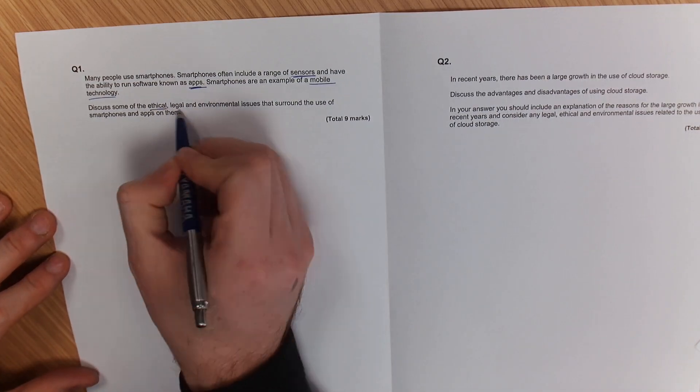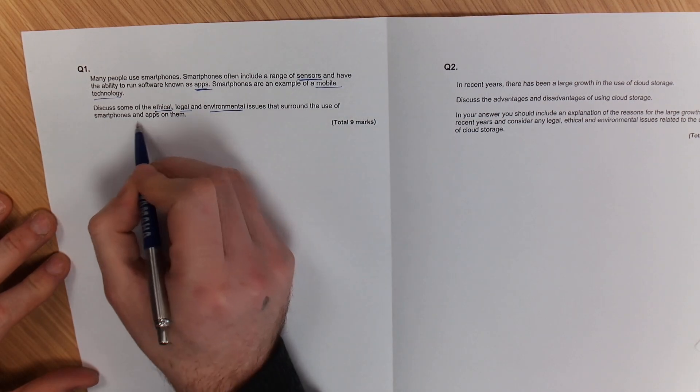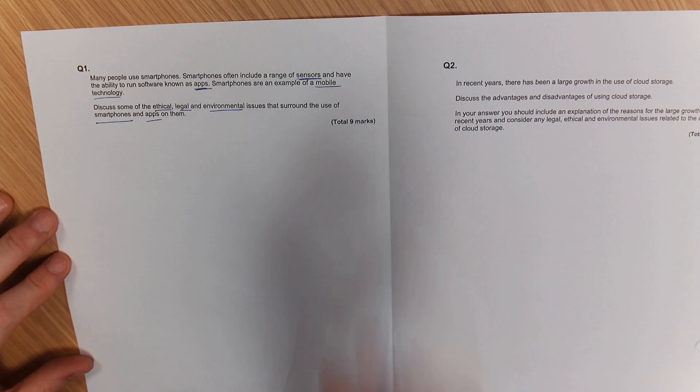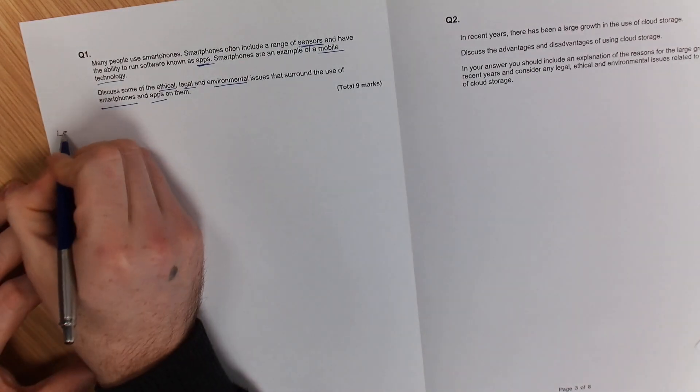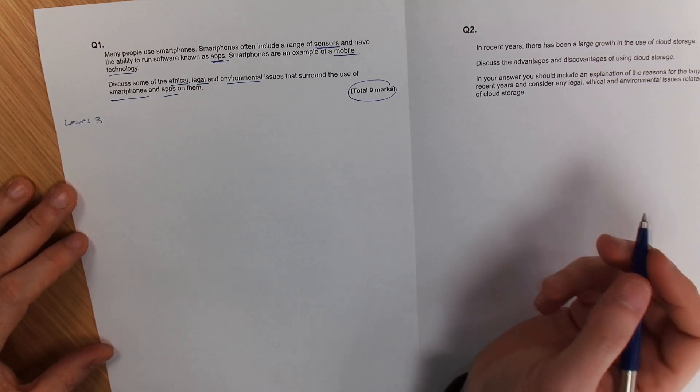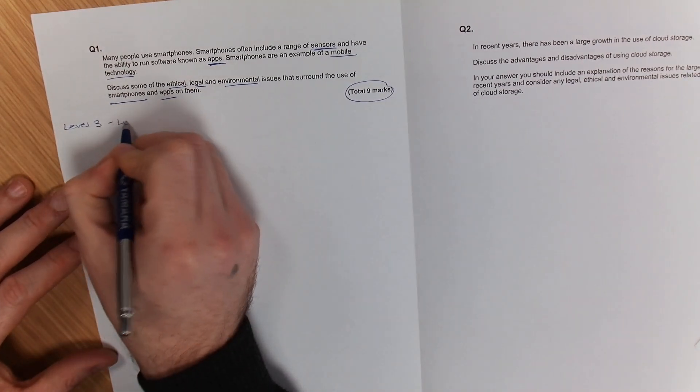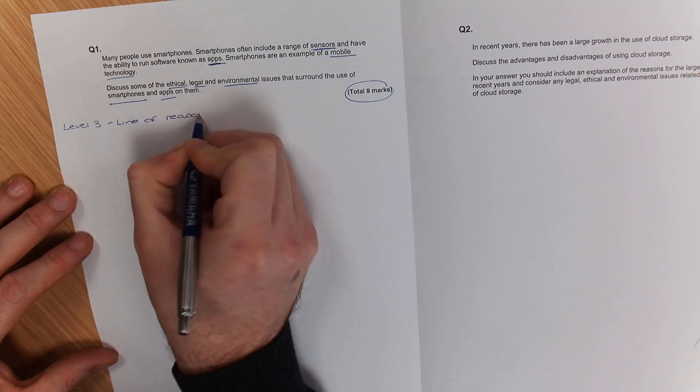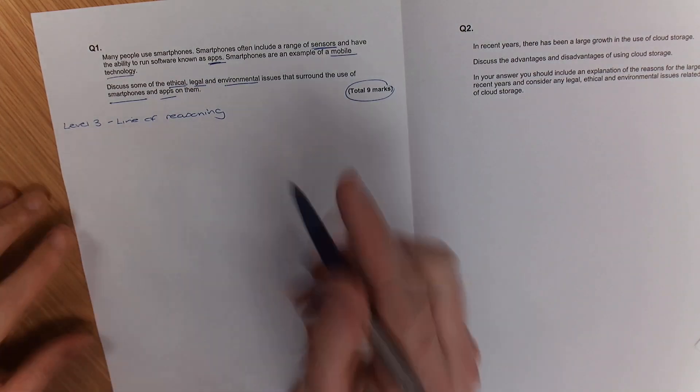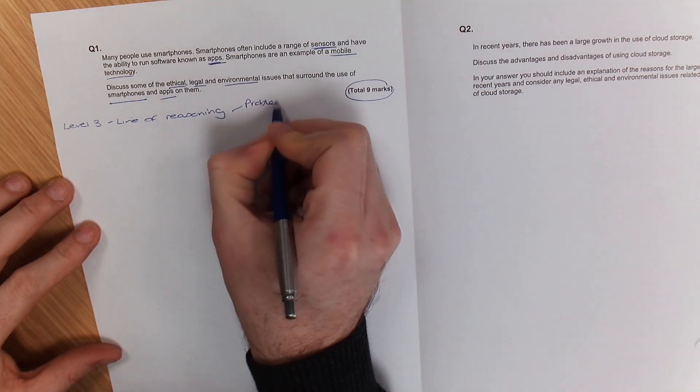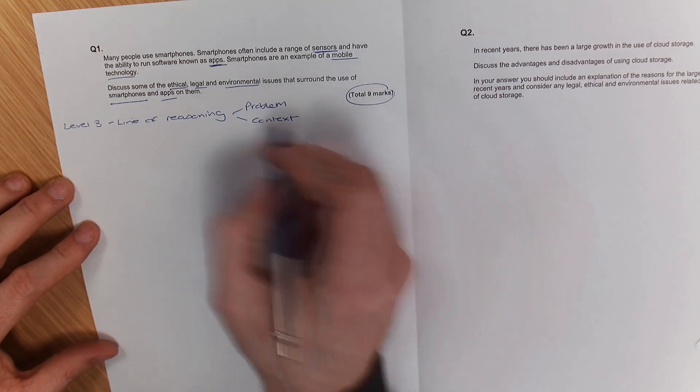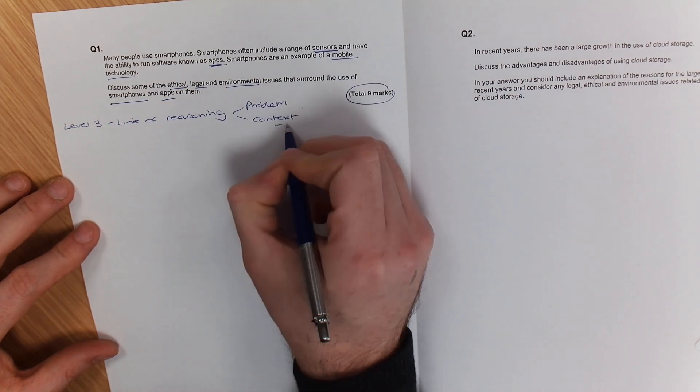Discuss some of the ethical, legal and environmental issues that surround the use of smartphones and apps on them. Now generally speaking when you look at a mark scheme what they do is they talk about something called a level three answer. Level three answers mean that you've got the full nine marks. It's obviously to do with smartphones.